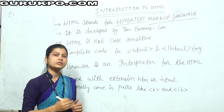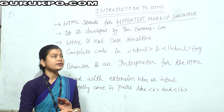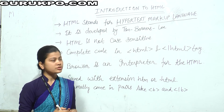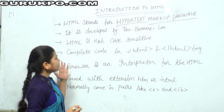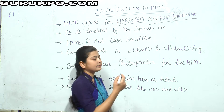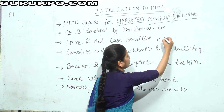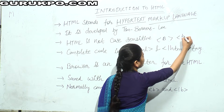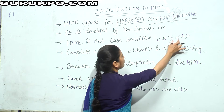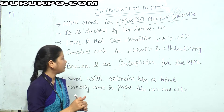A markup language is a set of markup tags that are used in an HTML document. HTML is not case sensitive — the tag 'b' is the same as the tag 'B'. The work of both tags is the same in HTML.